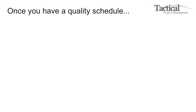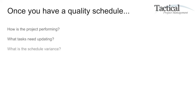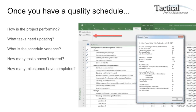Once you have a quality project schedule, how is the project performing? What tasks need updating? What is the schedule variance? How many tasks haven't started? How many milestones have been completed? To do this, you can scan your entire project schedule, or you can just click one button to run the Project Metrics macro, and instantly you'll calculate the project metrics in minutes.